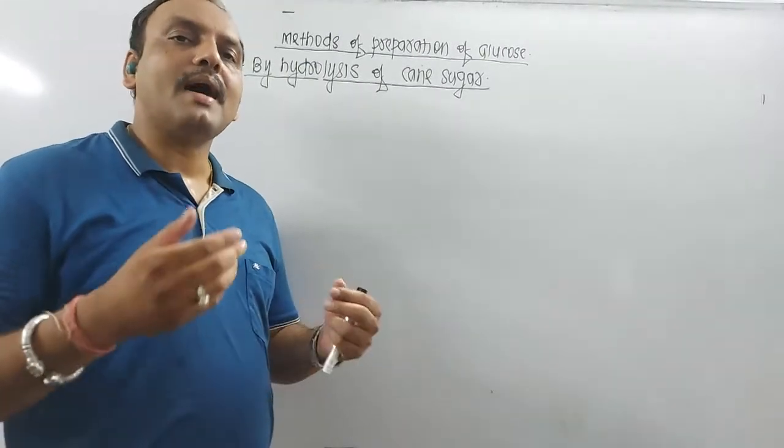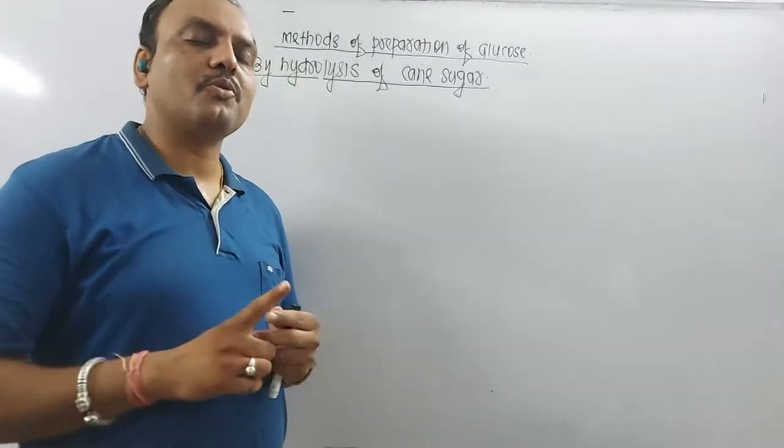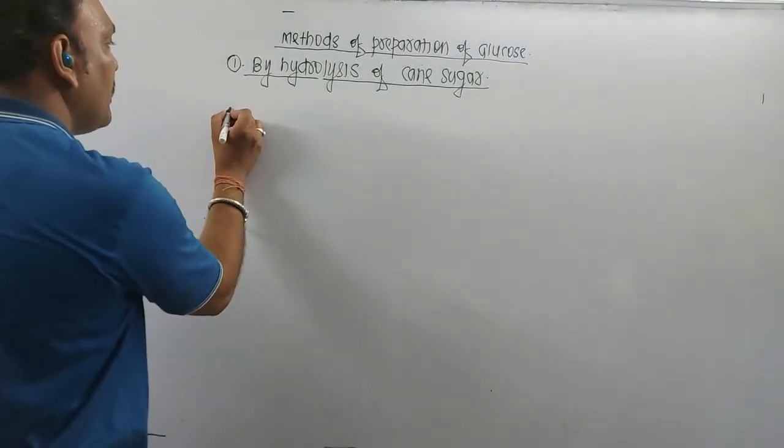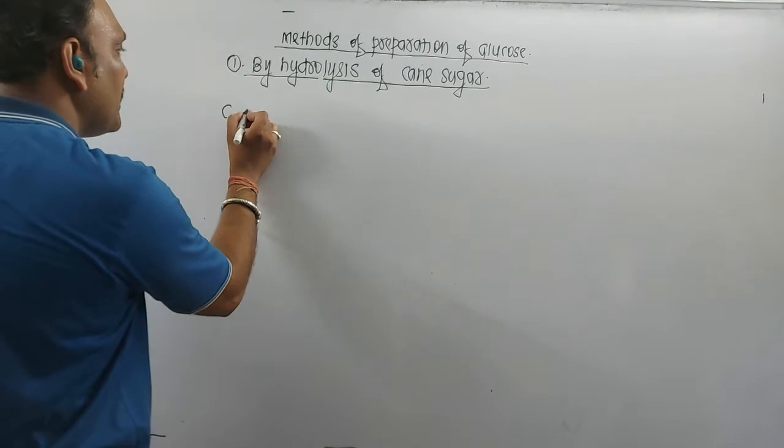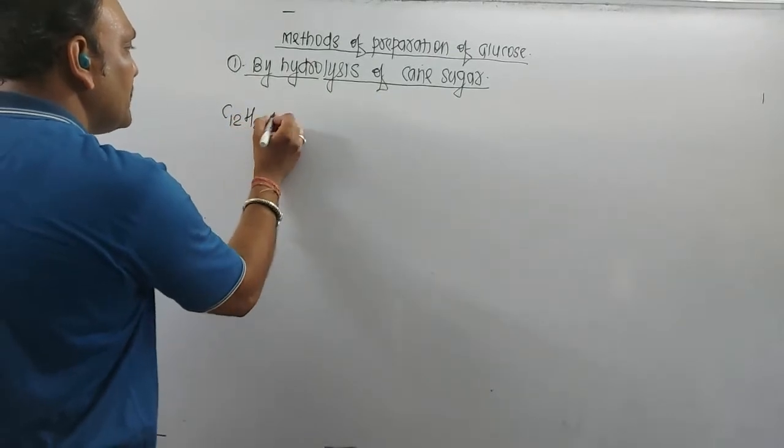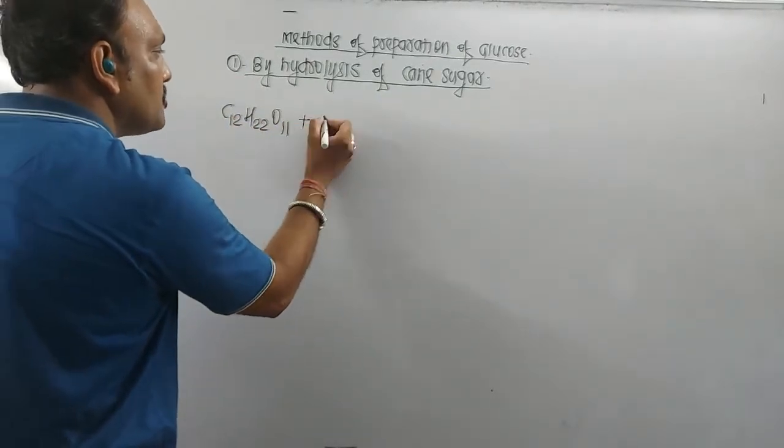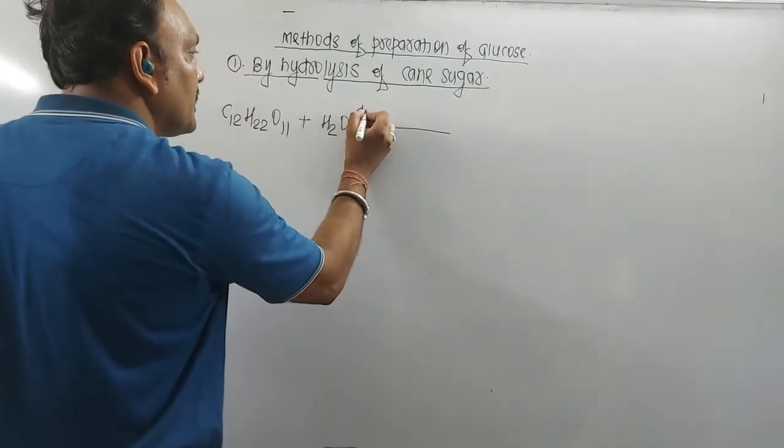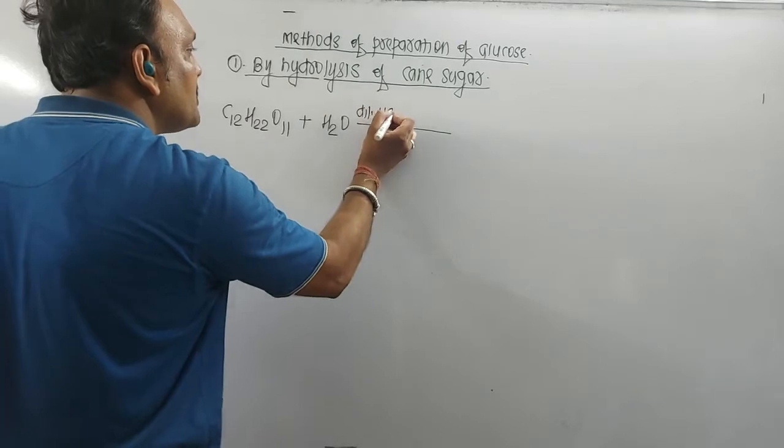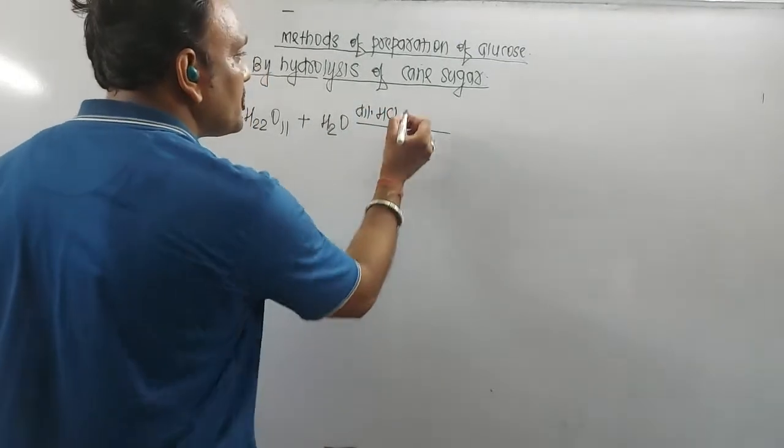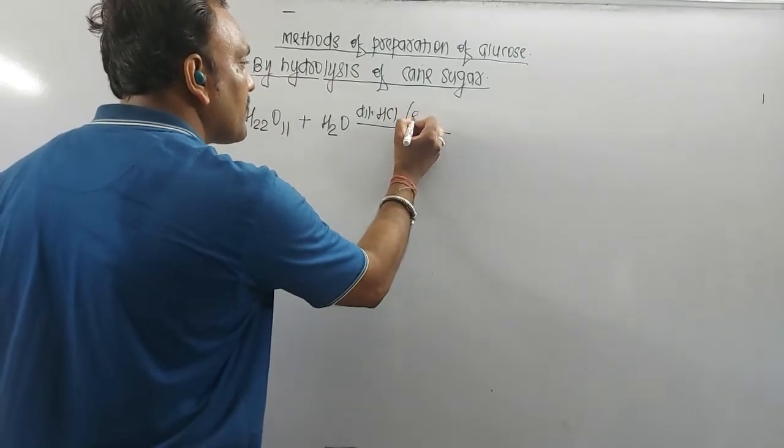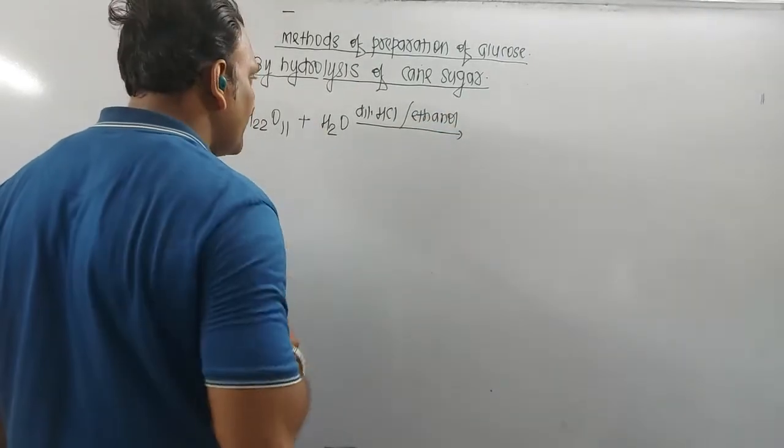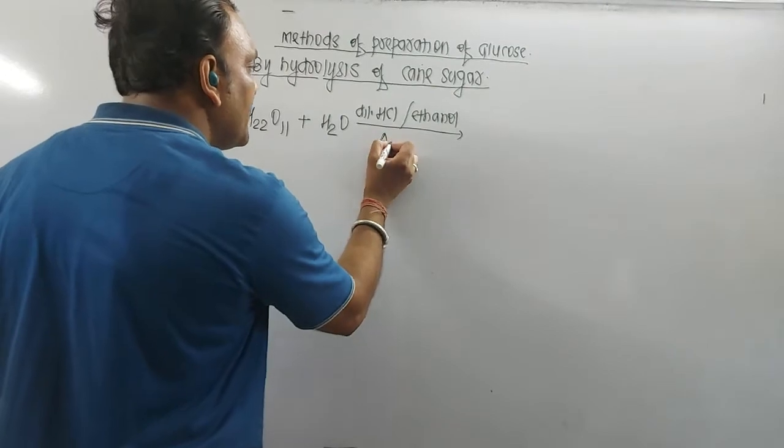Now remember, among those two, one is fructose and another is glucose. So remember, the molecular formula of sucrose is C12H22O11. So when this sucrose is hydrolyzed by using either dilute HCl or one can use dilute H2SO4 also. But remember, ethyl alcohol is to be added during the course of hydrolysis and on heating.